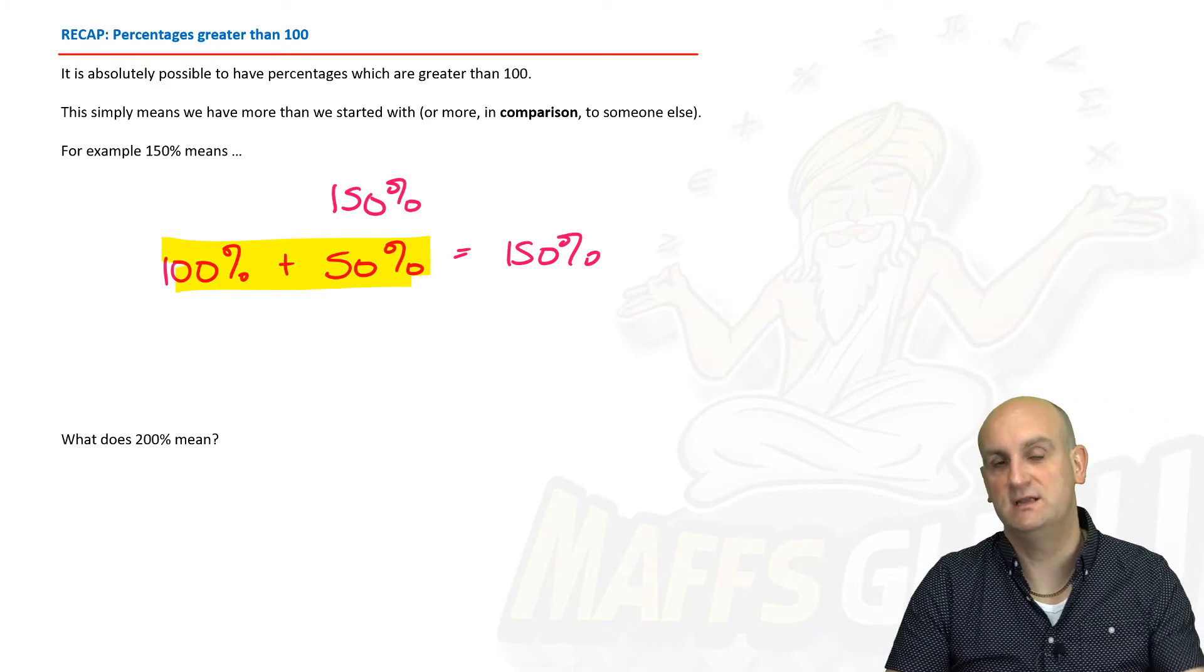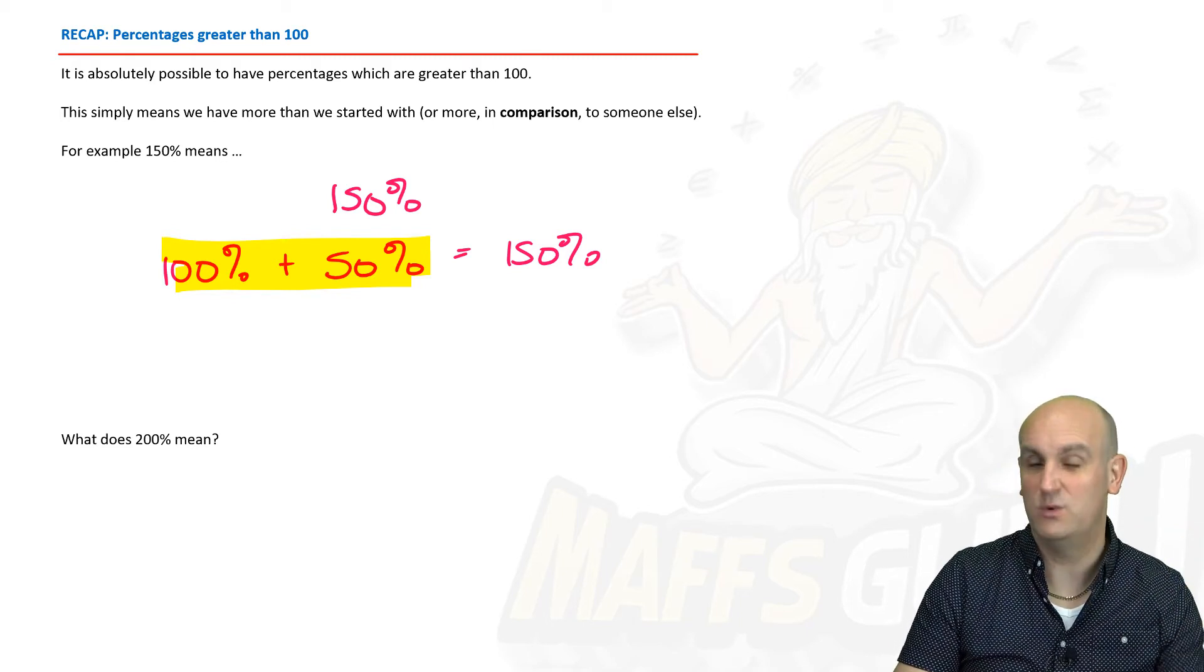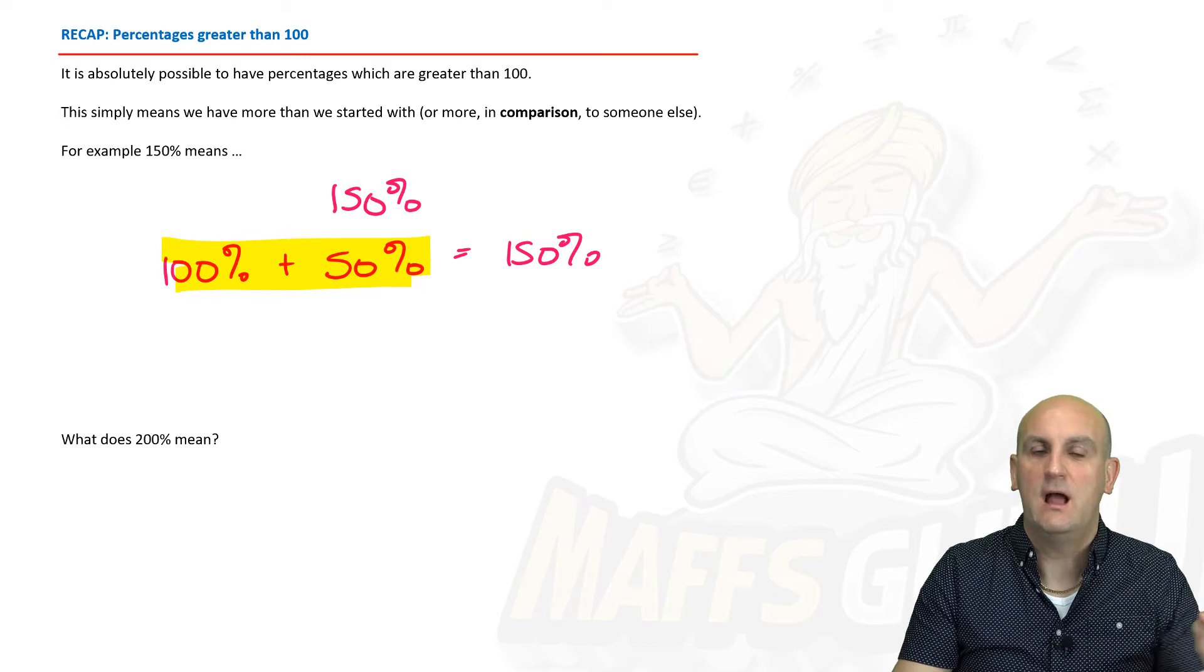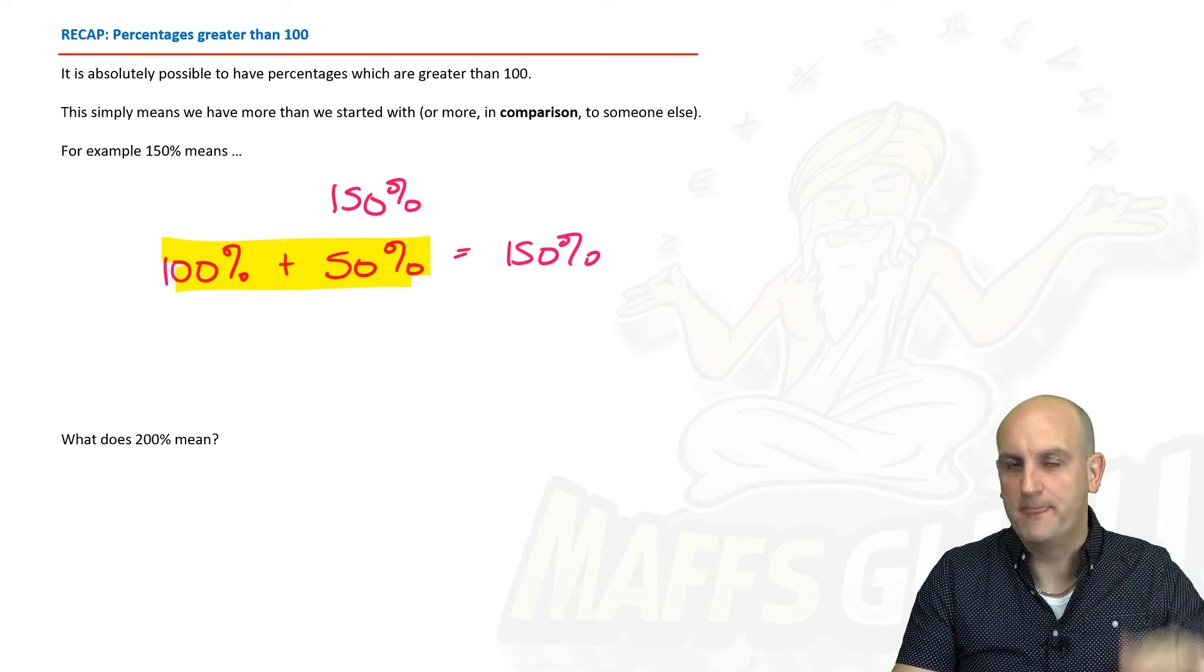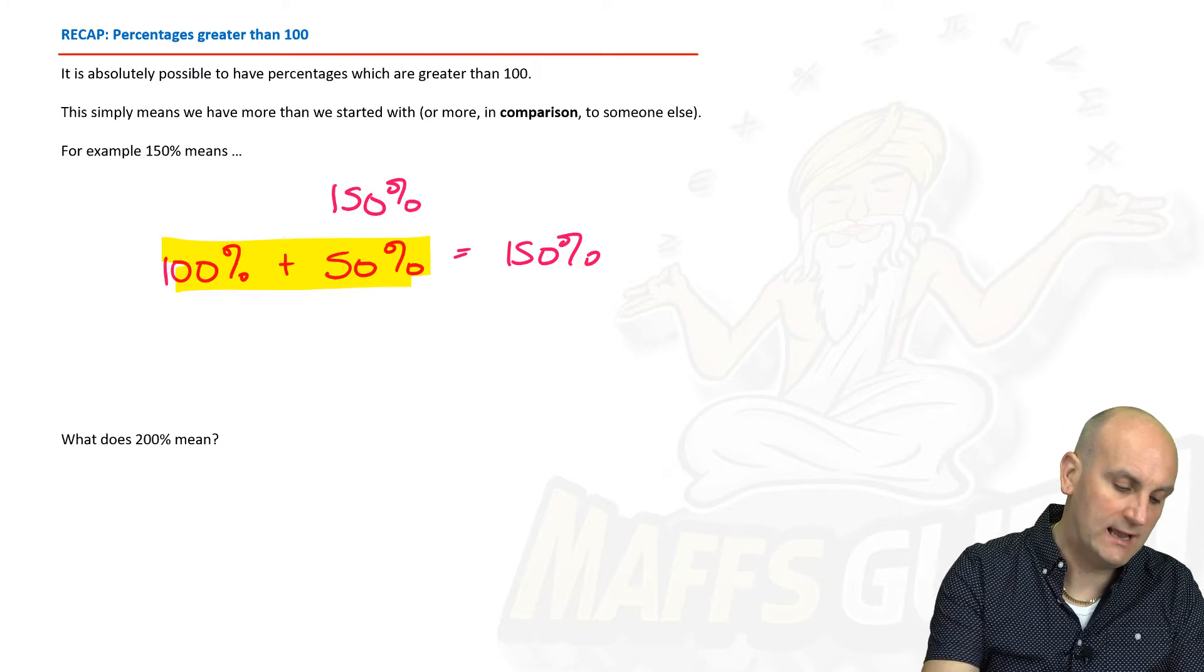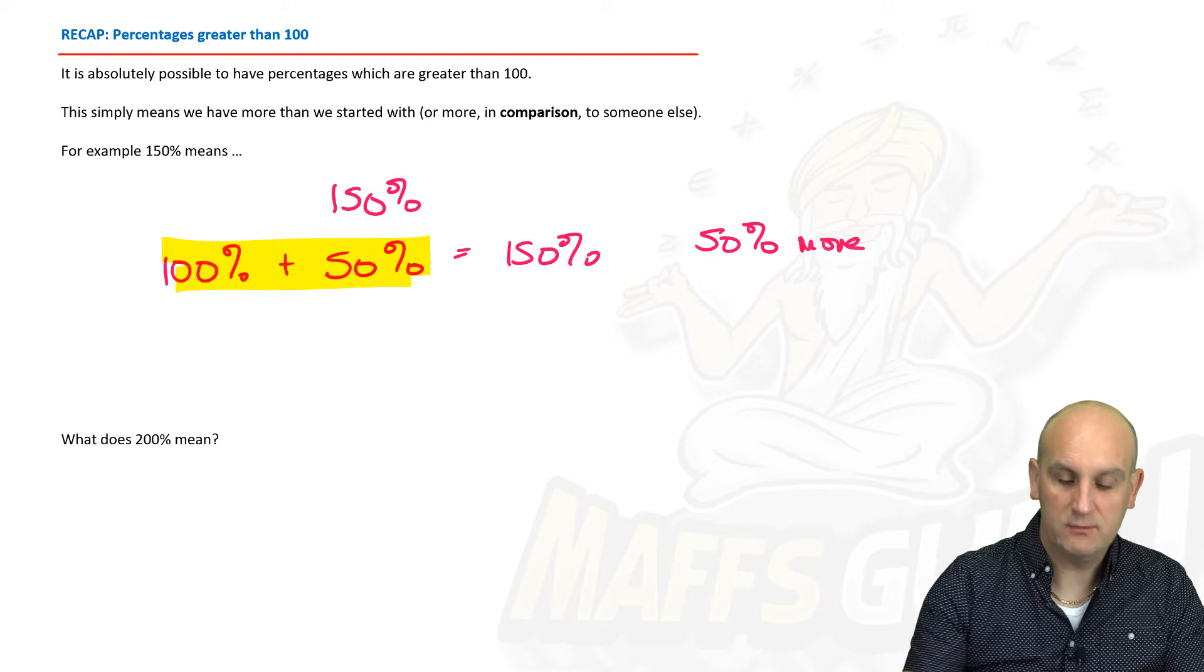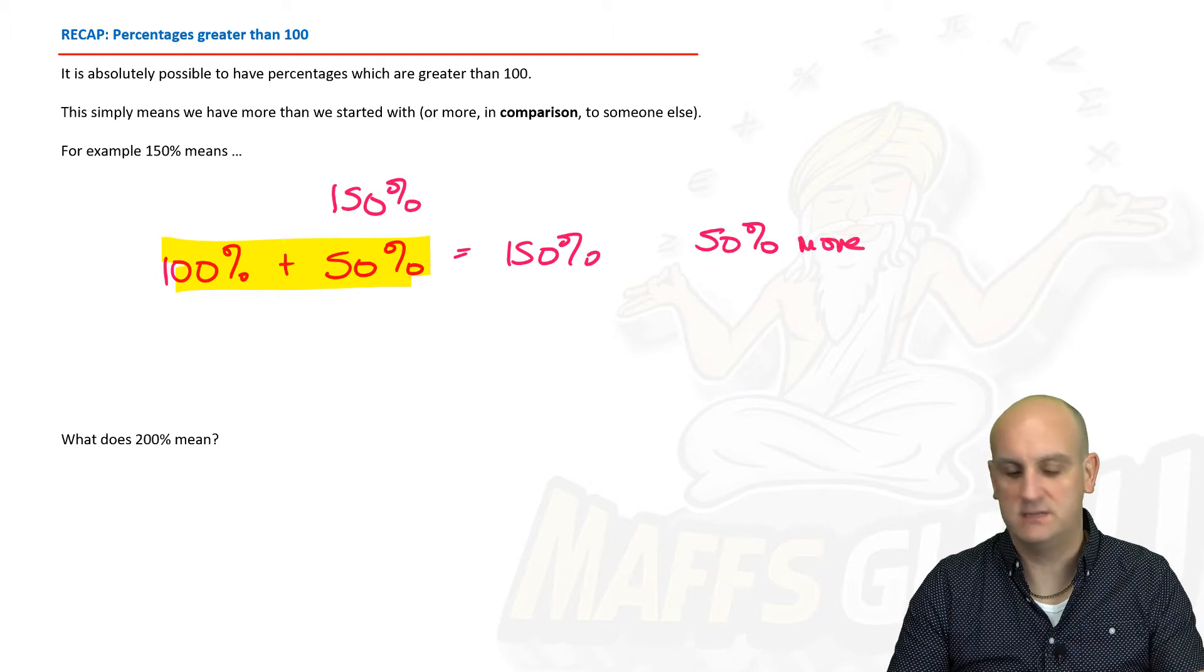And this line of working out here is going to be fairly critical to the rest of this video. Think about what percentage they're giving you. Look at the number 100 because that's what we normally have, means everything. Then try and work out how much bigger it is or how much smaller it is than 100%. So we can think of this as 50% more than what I started with.